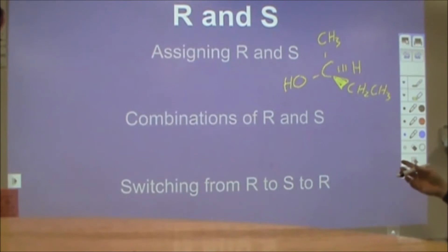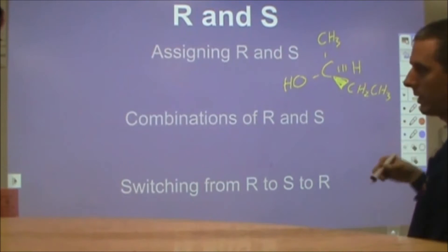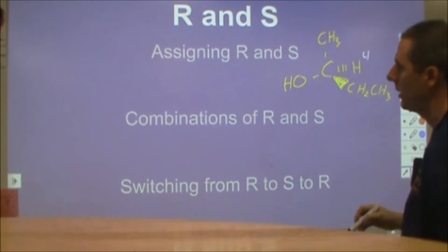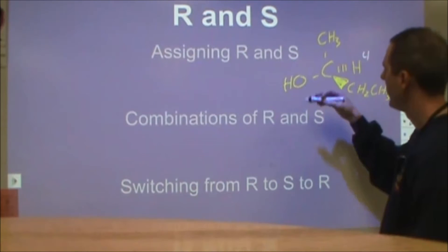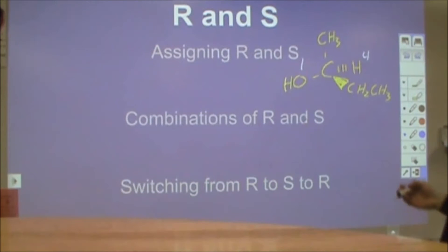This has four different things attached. To figure out whether it's R or S, you need some way to make this into a way to visualize that everyone would be consistent. So we label each of the different constituents a priority one through four. The smaller the atomic number, the larger the number assigned to the priority. So the highest priority is going to be the oxygen here because that's the highest atomic number.